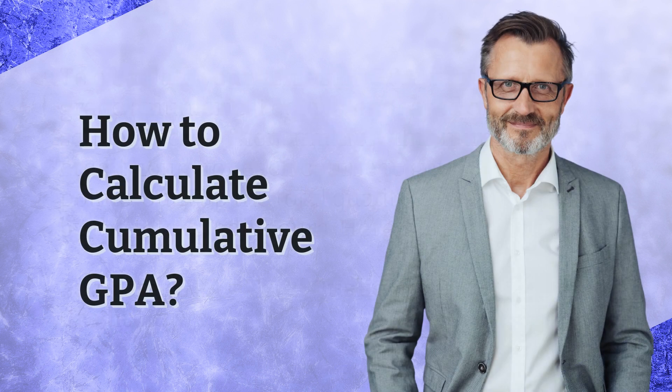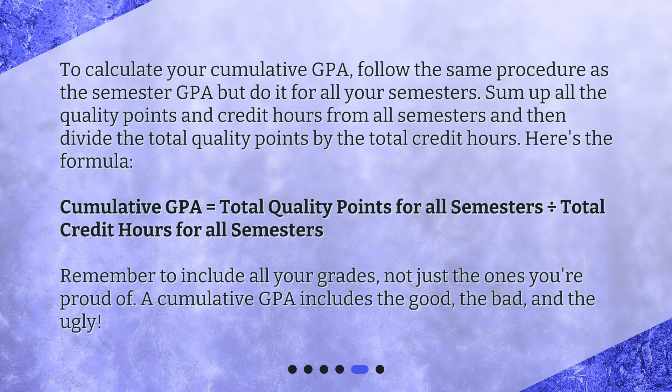How to calculate cumulative GPA? To calculate your cumulative GPA, follow the same procedure as the semester GPA, but do it for all your semesters. Sum up all the quality points and credit hours from all semesters, and then divide the total quality points by the total credit hours. Here's the formula: Cumulative GPA equals total quality points for all semesters divided by total credit hours for all semesters. Remember to include all your grades, not just the ones you're proud of. A cumulative GPA includes the good, the bad, and the ugly.